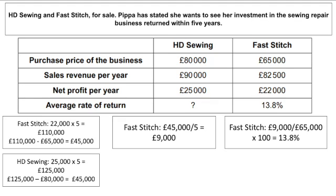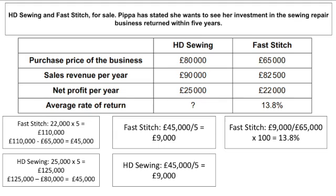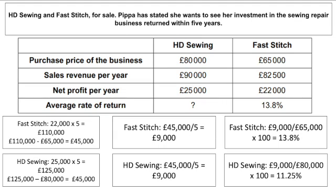Now for HD Sewing: £25,000 times five gives £125,000, minus the purchase price of £80,000, equals £45,000. Divide by five years — again £9,000 average annual profit — the same. But the average rate of return will be different because the purchase price is different. £9,000 divided by £80,000 times by 100 gives us 11.25%. So which one should we go for? We should go for FastStitch because it has the highest average rate of return, giving the best chance of seeing that return within five years.